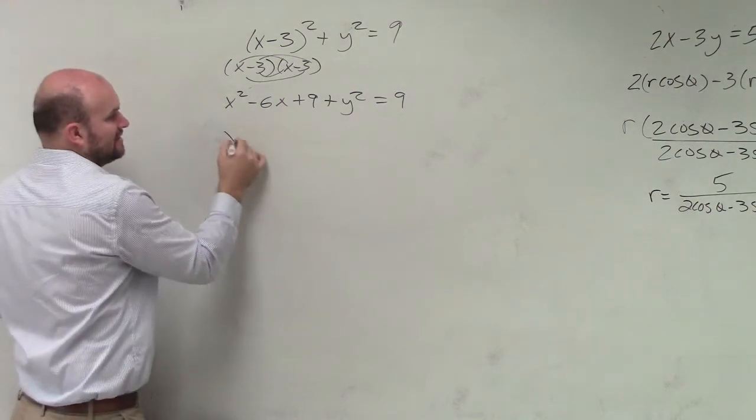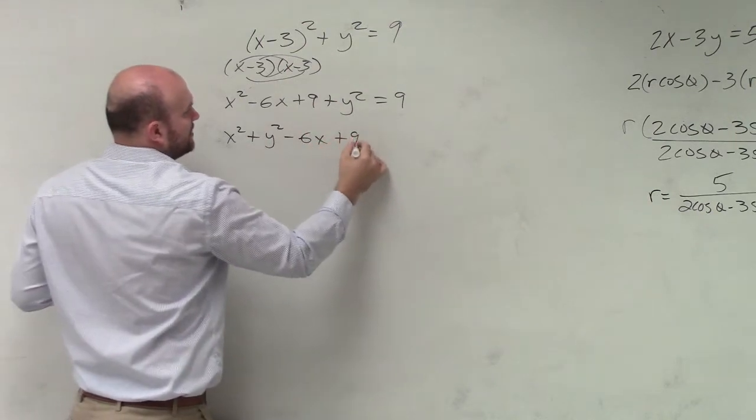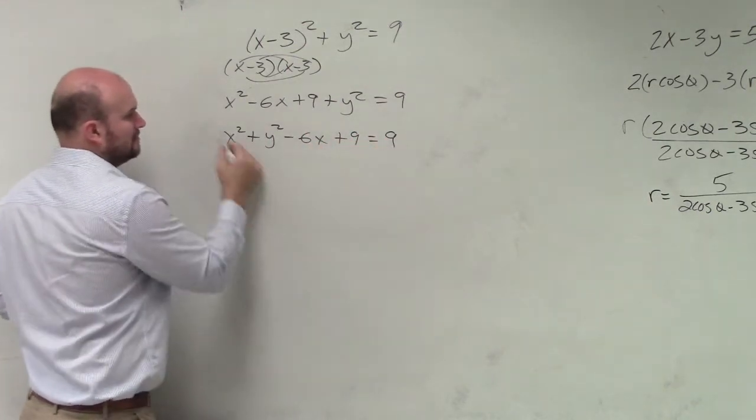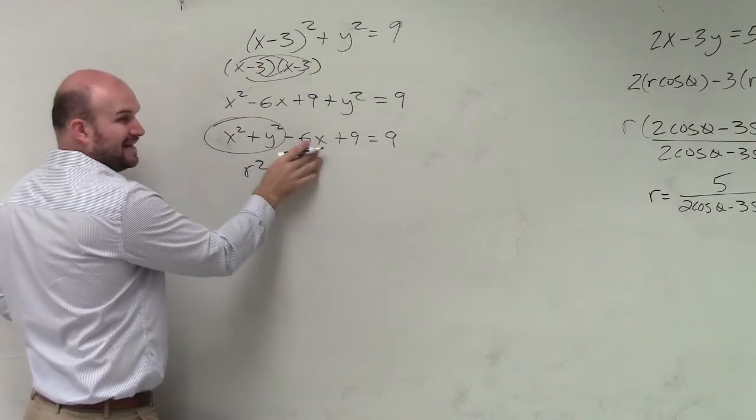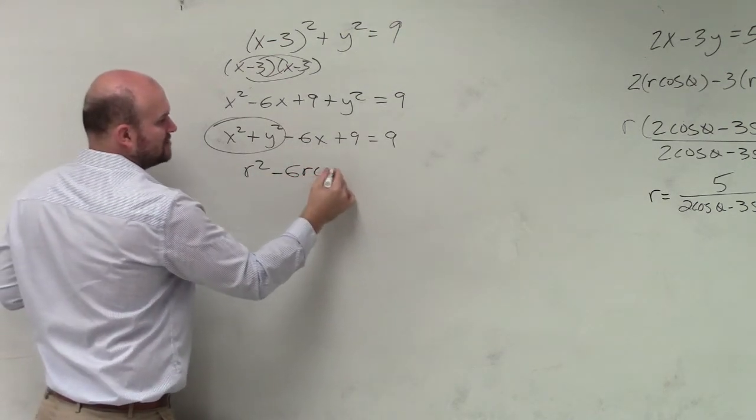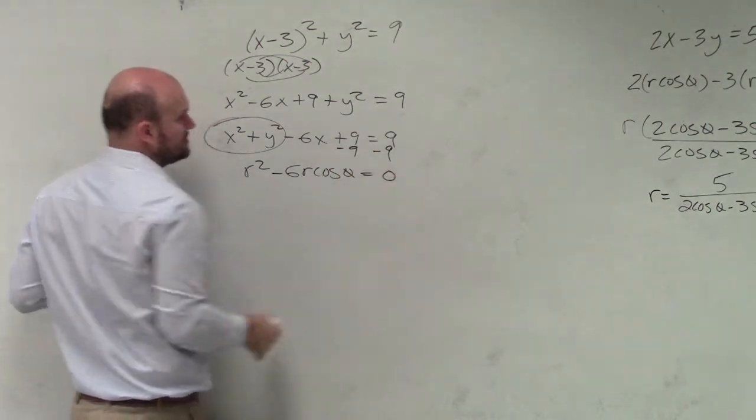Well, then I can rewrite this. x squared plus y squared minus 6x plus 9 equals 9.